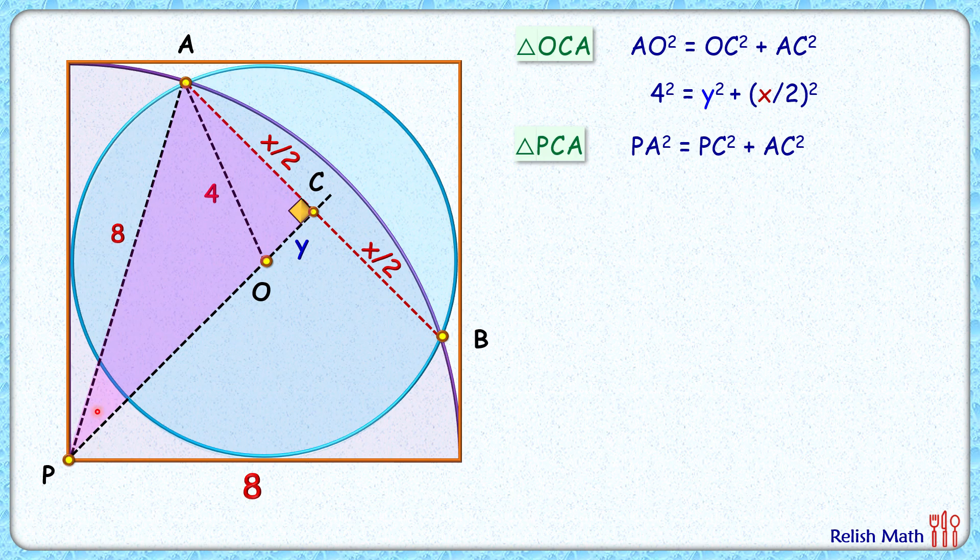How about PC length? For PC length we need PO length. If you look carefully, O is the center of square and thus the square diagonal will pass through point O. Now full diagonal length by formula is 8√2 and PO is half of it. So PO length will be 4√2.